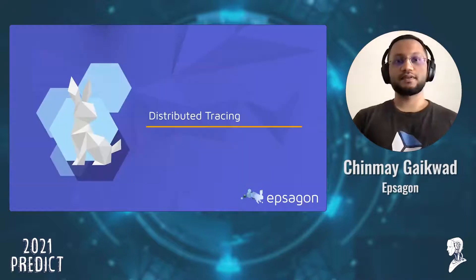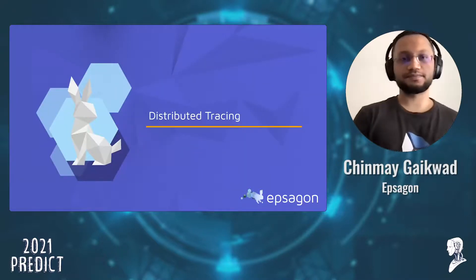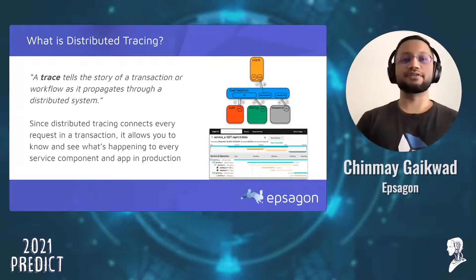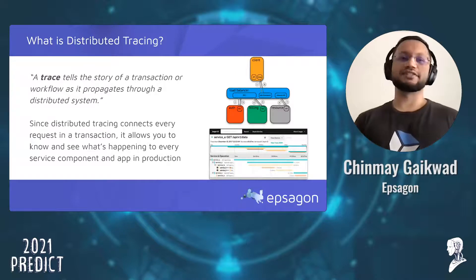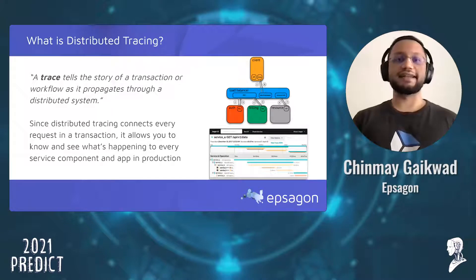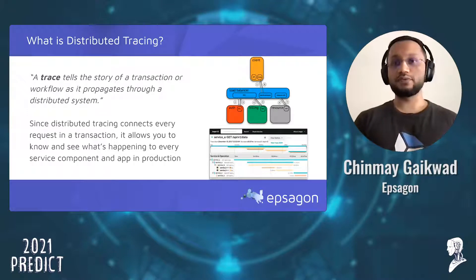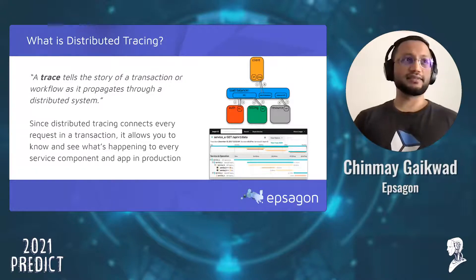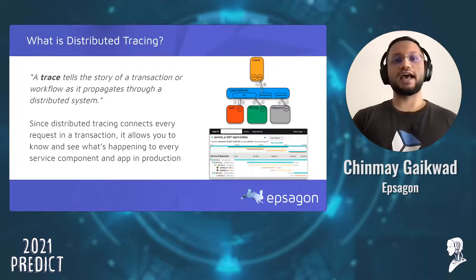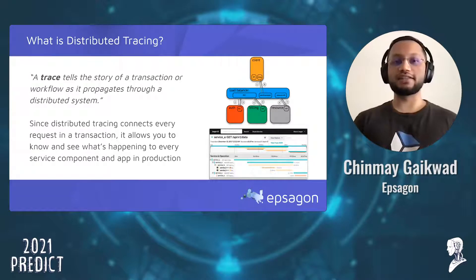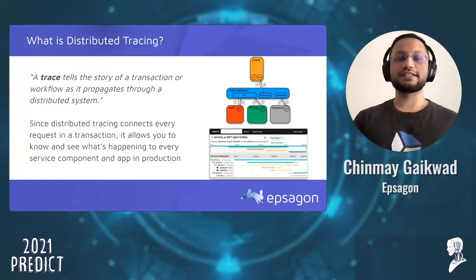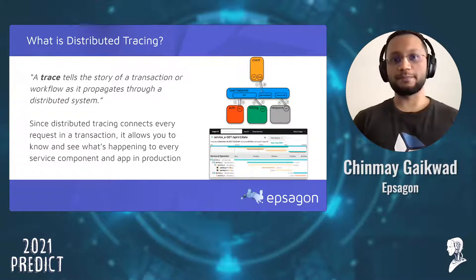That's where distributed tracing comes into the picture. Distributed tracing was born out of Google over a decade ago and allowed engineers to trace the specific path a request makes through services. It helps shine the light on the needle in the haystack that logging or metrics can miss. Just because your application is made up of 15,000 or 20,000 services doesn't mean a request will travel through every single one — at best it will travel through a fraction of those services.